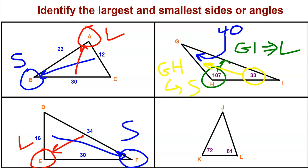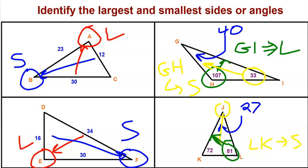Moving down to triangle JKL, we are given two angles: 72 degrees and 81 degrees. Together that is 153 degrees, so the remaining angle is 27 degrees. Since 27 degrees is the smallest angle, the side opposite it — LK — is the shortest side. And since 81 degrees is the largest angle, the side opposite it — JK — is the largest side.